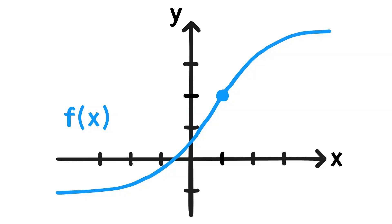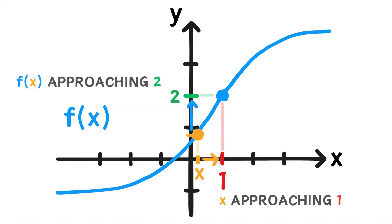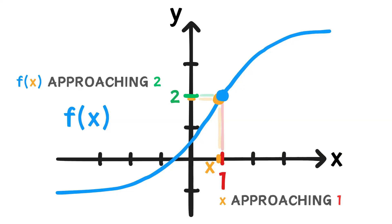Here, we have a function f of x. To the left of 1, let's put a point on the function, x. Now, what happens as we slide x closer and closer to 1 without actually reaching it? As x approaches 1, notice that the function value of x approaches 2.